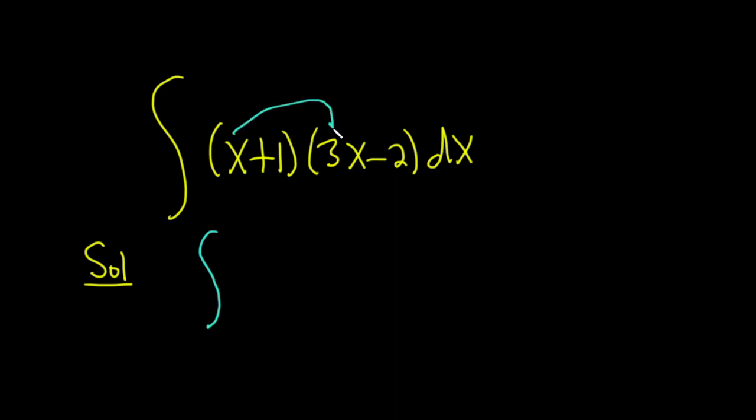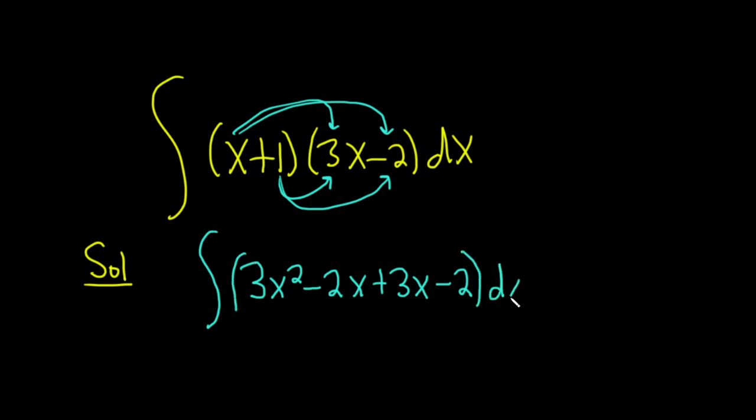x times 3x is going to give us 3x². And then x times -2 is going to give us -2x. 1 times 3x is going to give us +3x. And 1 times -2 is going to give us -2. Then we have the parentheses and the dx.